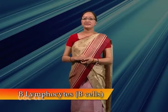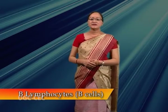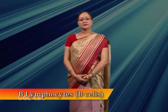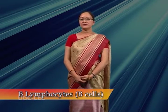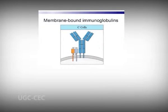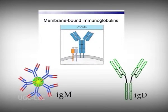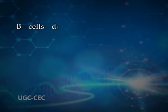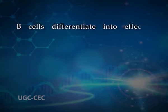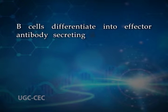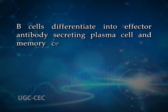B lymphocytes, or B cells, mature in the bone marrow in a number of mammalian species including human beings and mice. Mature B cells display membrane-bound immunoglobulins, particularly IgM and IgD, as receptors for antigens. After antigen activation, B cells differentiate into effector antibody-secreting plasma cells and memory cells.